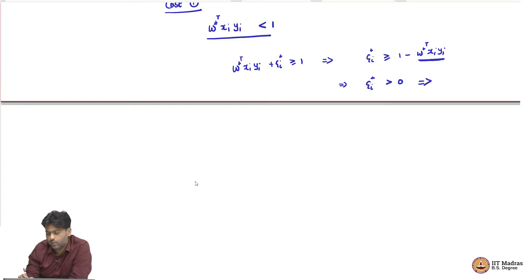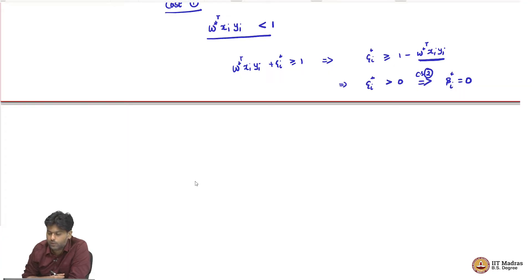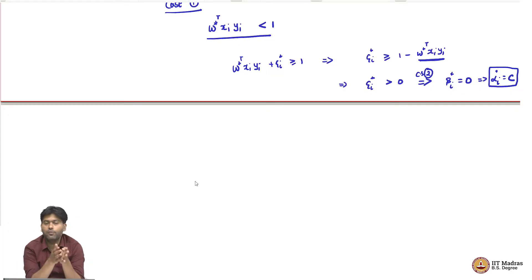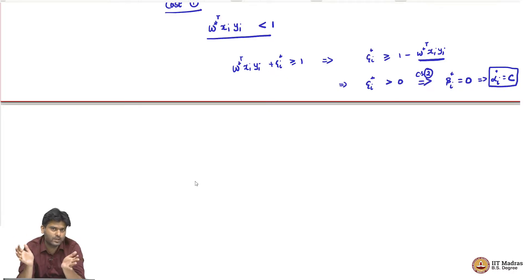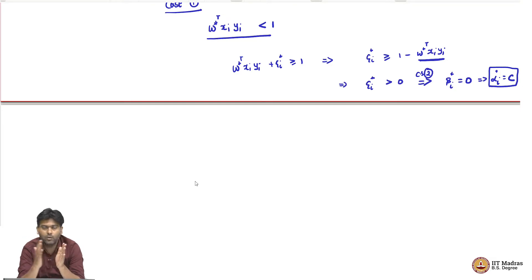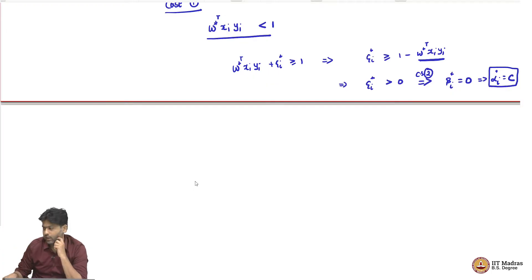If epsilon_i star is strictly greater than 0, then by complementary slackness 2, we know that beta star_i will be equal to 0 because the product has to be equal to 0. Now beta_i star equal to 0 implies alpha star_i equals C. So what is this saying? This is saying that if I solve the primal and I find that a point has strictly less than 1 margin, then that point necessarily has alpha star_i equals C. The point is strictly away from the hyperplane but on the wrong side, and then that point is very important because alpha star_i equals C.